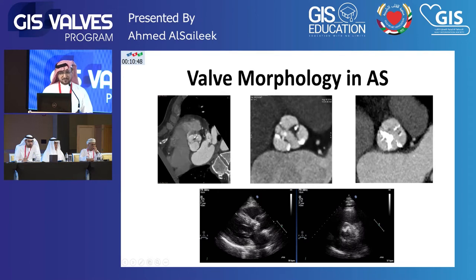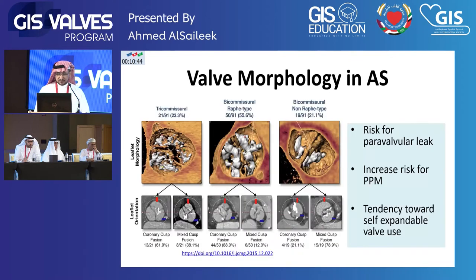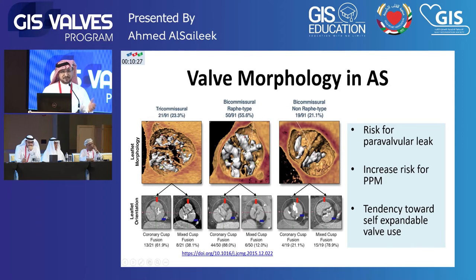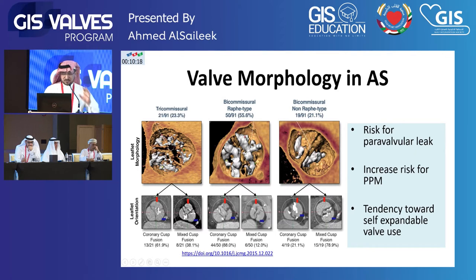Compare this to echocardiography, where if there is calcification, it is very difficult to see all the anatomy of the aortic valve. It is important to recognize bicuspid aortic valve, because many reports indicate that with bicuspid aortic valve there is more risk of paravalvular leak, more risk of permanent pacemaker, and more tendency to use a self-expandable valve.